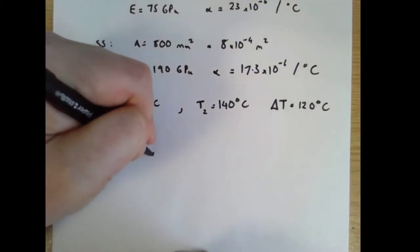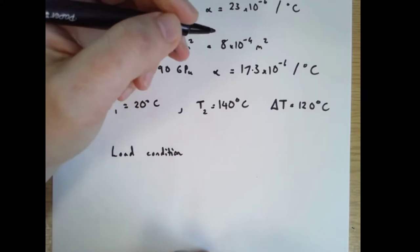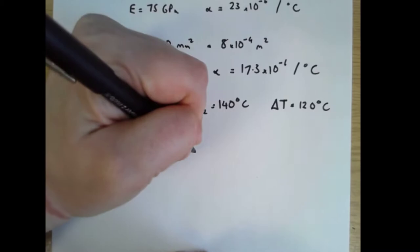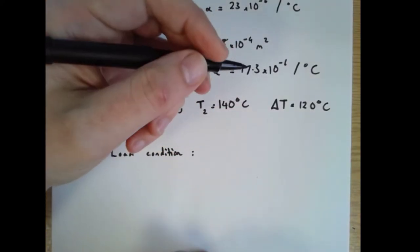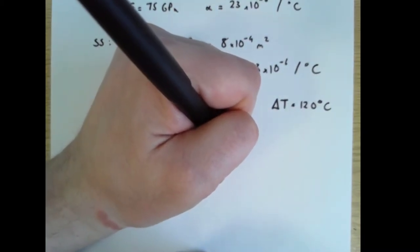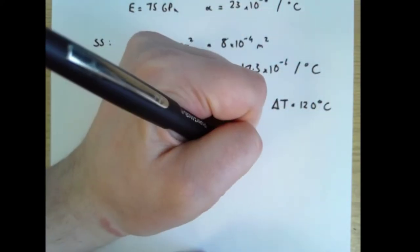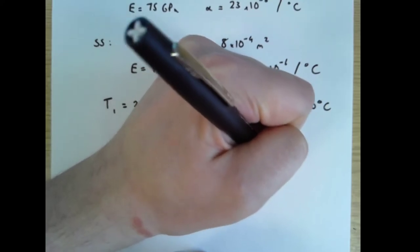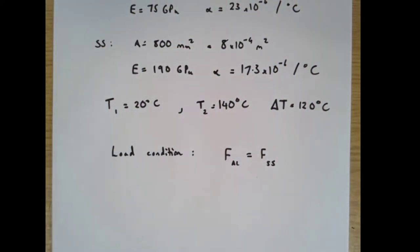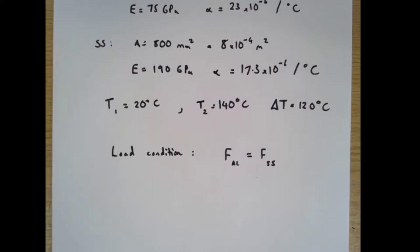This is a tricky question and I'm going to need to think quite hard about it. We'll have a load condition, and that's going to say: once the two bars contact each other, the force in the aluminium must equal the force in the stainless steel. I want to make sure I'm not doing something problematic with signs — both of them will be in compression once they're pushing against each other. So as long as I consider that compression is positive, the amount of compression in the aluminium must equal the amount of compression in the stainless steel.